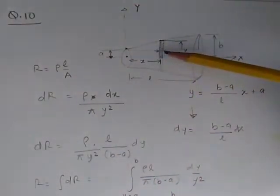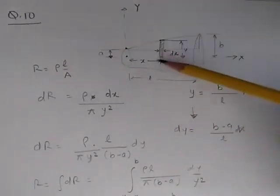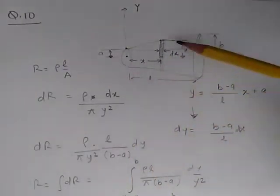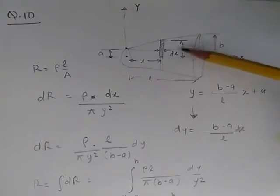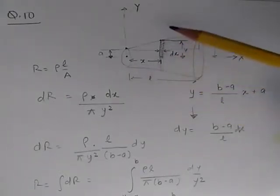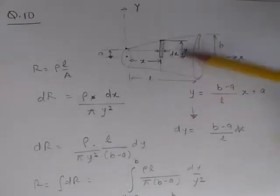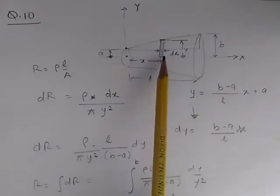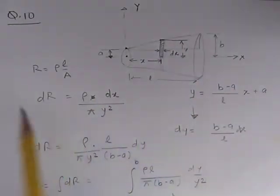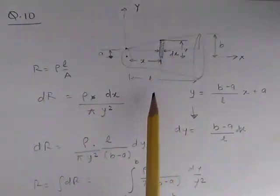We have drawn an x-axis and y-axis to make our calculations easy. This is a small strip of width dx. Consider this strip that has a height of y. It's actually a circular disk that has a radius of y and a thickness of dx.